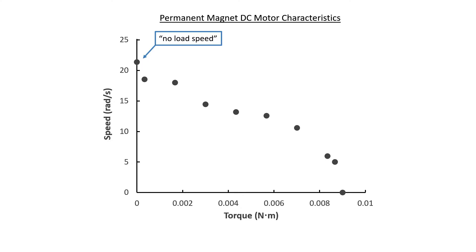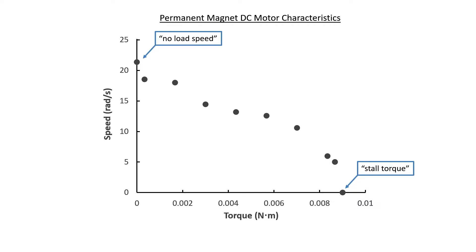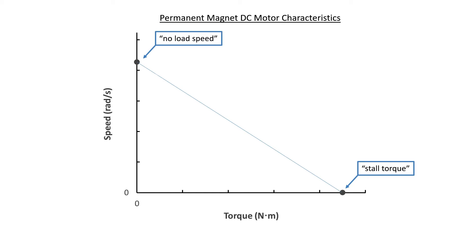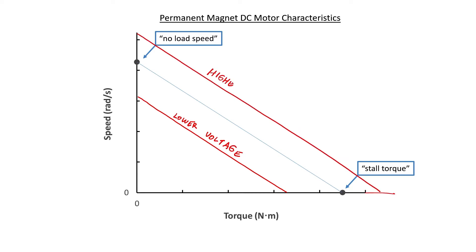The highest speed a motor can reach is called the no-load speed — that's the speed when you don't have any mechanical load attached to the shaft, and all the mechanical power goes to overcoming friction. The highest possible torque is called the stall torque — the maximum torque when the motor stops spinning completely. With a permanent magnet DC motor we expect a roughly linear relationship between speed and torque at constant voltage. Lowering the voltage shifts the entire curve down; increasing the voltage shifts it up.